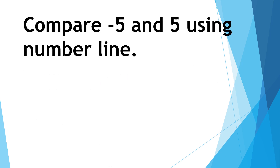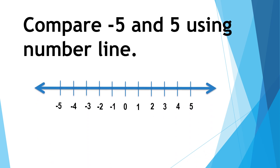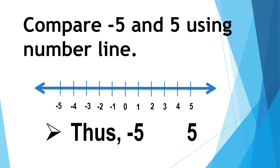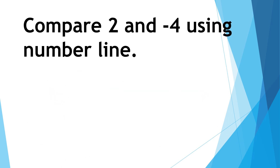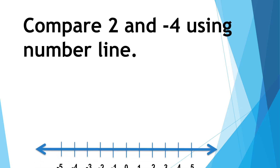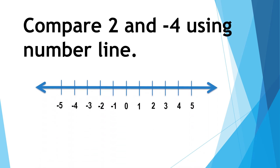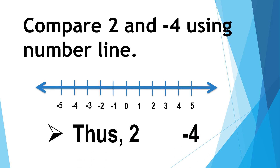Compare negative five and positive five using the number line. Negative five is on the left and positive five is on the right. Thus, negative five is less than positive five. Compare positive two and negative four using the number line. Negative four is on the left and positive two is on the right. Thus, positive two is greater than negative four.